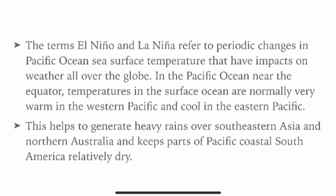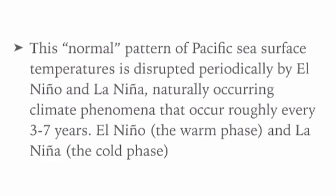We need a world map for this topic. El Niño and La Niña refer to periodic changes in Pacific Ocean sea surface temperatures that have an impact on weather across the entire globe. In the Pacific Ocean near the equator, surface ocean temperatures are normally very warm in the western Pacific and cooler in the eastern Pacific. This helps generate heavy rains over South-East Asia and Australia, and keeps the Pacific coast of South America relatively dry. This normal pattern is disrupted periodically by El Niño and La Niña.